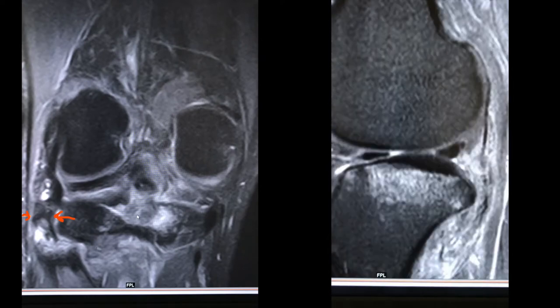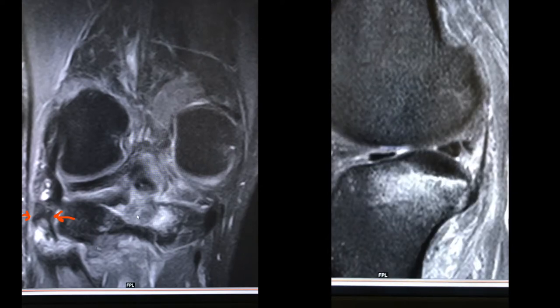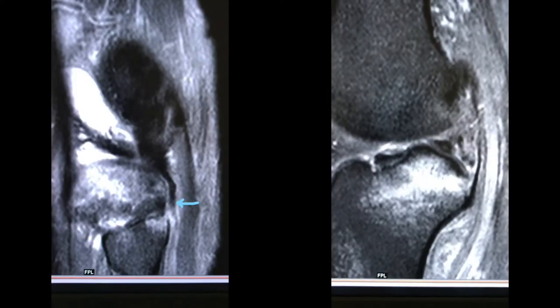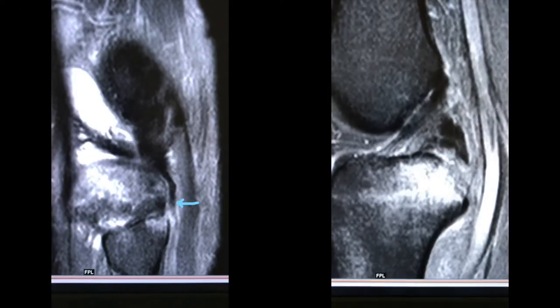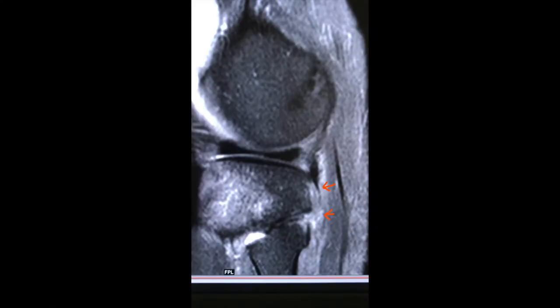Subsequent to this, you can see the avulsion of the popliteofibular ligament. Then there is arcuate ligament and posterior capsule injury. Then the popliteus myotendinous junction injury — and don't miss the fascial avulsion.